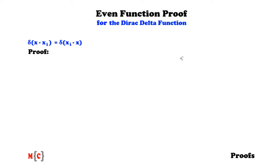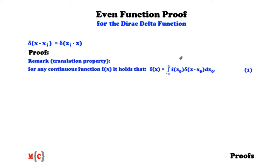For the proof we will use integration. Before we actually start, let's make the following remark which is related to the translation property, which says that for any continuous function f(x) it holds that f(x) is equal to the integral from minus infinity to infinity over f(x_0)δ(x - x_0)dx_0.